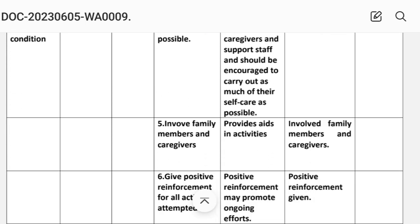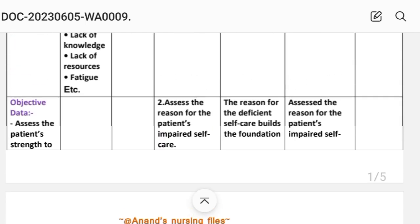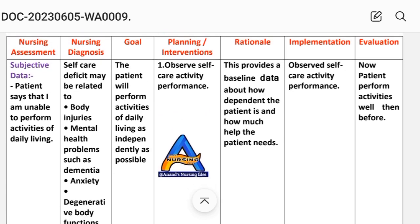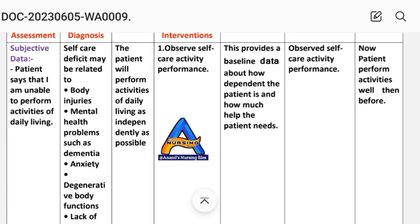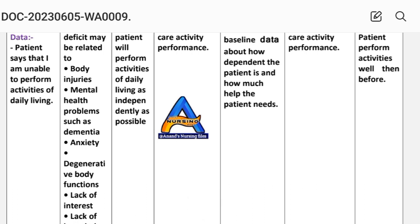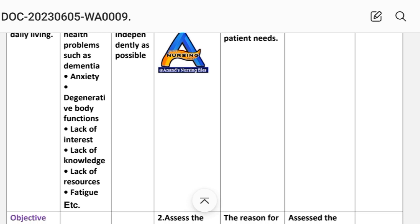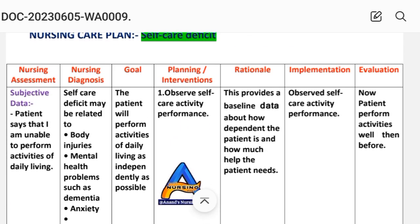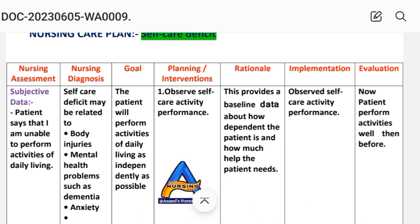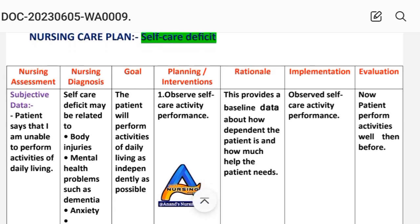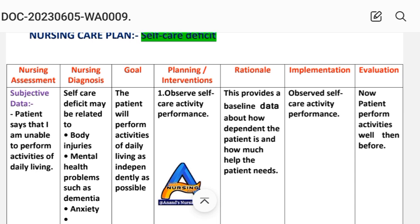Next, assess mental health condition. After assessing these data, we write the nursing diagnosis. Self-care deficit may be related to body injury, mental health problems such as dementia or anxiety, degenerative body functions, lack of interest, lack of knowledge, lack of resources, or fatigue. We can write any related factor — for example, self-care deficit related to body injury.